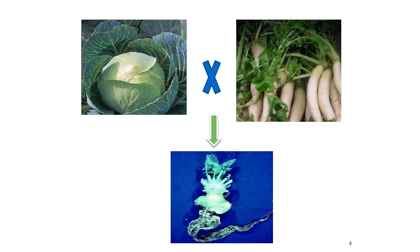Raphanobrassica is the cross between cabbage and radish. It gave cabbage-like roots and radish-like shoots, and that was a complete failure but was useful for further purposes.